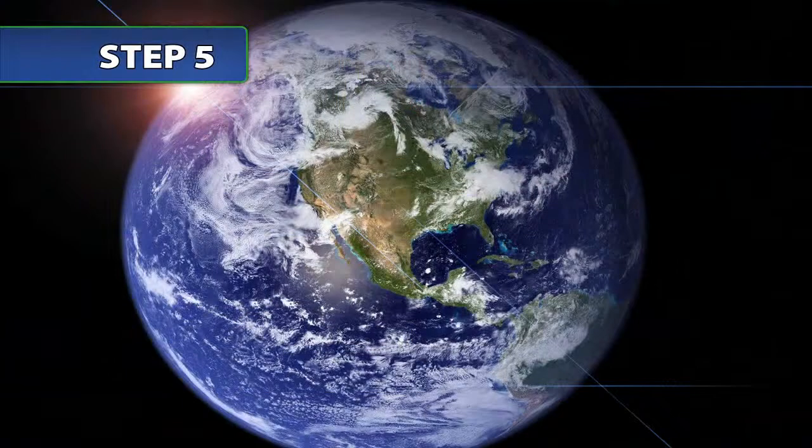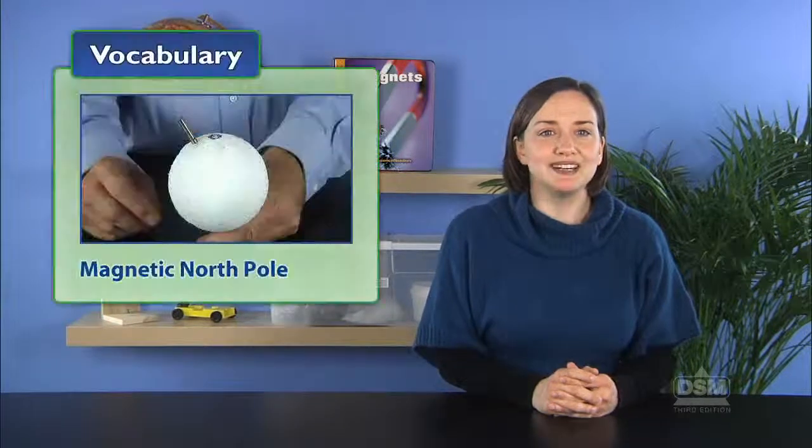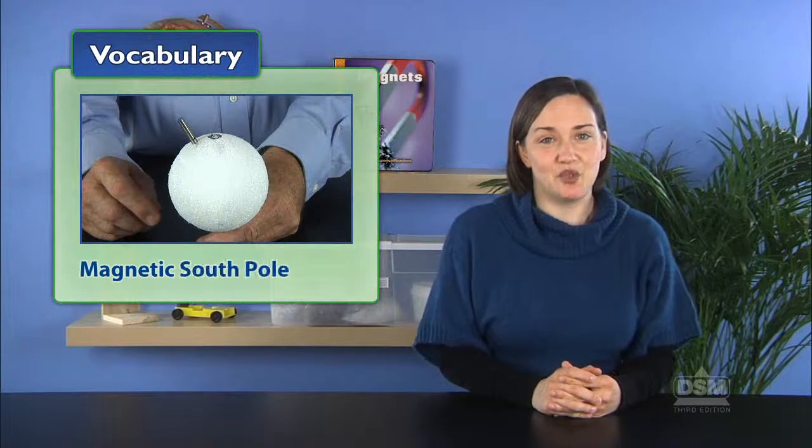Explain that the earth acts like a giant magnet and that the students' magnets are responding to the earth's magnetic field, lining up along the field lines and pointing to the magnetic north pole and magnetic south pole.